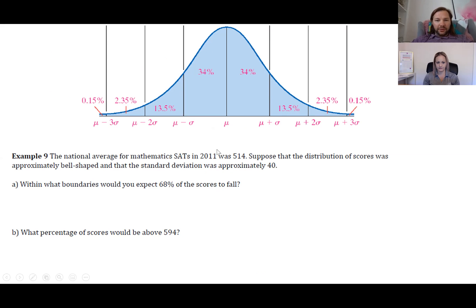Based on the empirical rule, since we're assuming this data is bell-shaped, 68% should fall within one standard deviation of the mean. The mean was 514, so to figure out this range you take 514 minus 40, which gives 474. Subtract another 40 to get 434. We're labeling up to three standard deviations away from the mean: 474, 434...